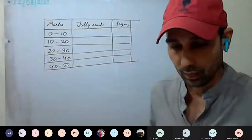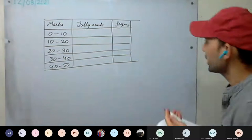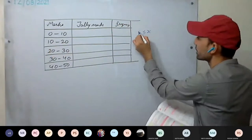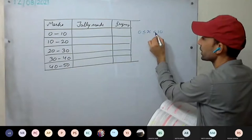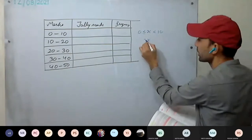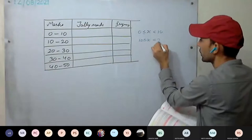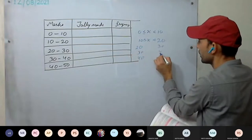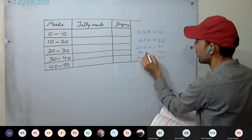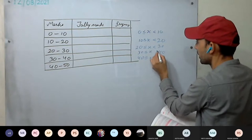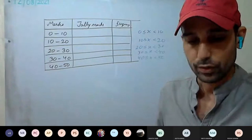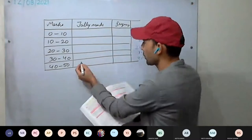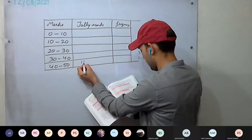These are exclusive class intervals: upper limit is excluded, so x is strictly less than 10 for the first class, less than 20 for the second, and so on. We will start the tally marks: 45 goes to the last class, 48 also, 15 goes to the second class.